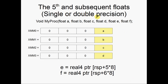The fifth and subsequent floats, whether single or double precision, are passed by the stack. If six parameters are passed — floats A, B, C, D, E, and F — XMM0, 1, 2, and 3 get A, B, C, and D, while E and F are passed by the stack. So E will be a real4 pointer at RSP plus 5 times 8. Shadow space is still made for these parameters and we're still pushing the return address, exactly the same calling procedure as with integers. F will be at RSP plus 6 times 8.